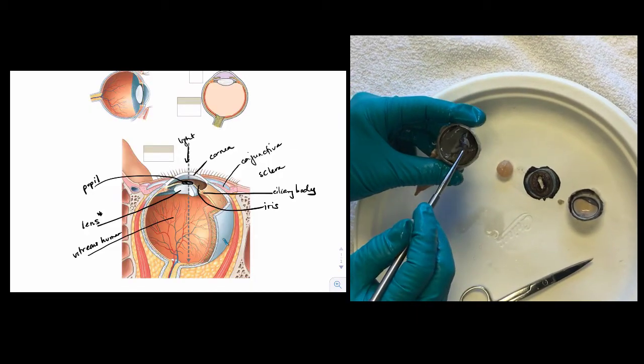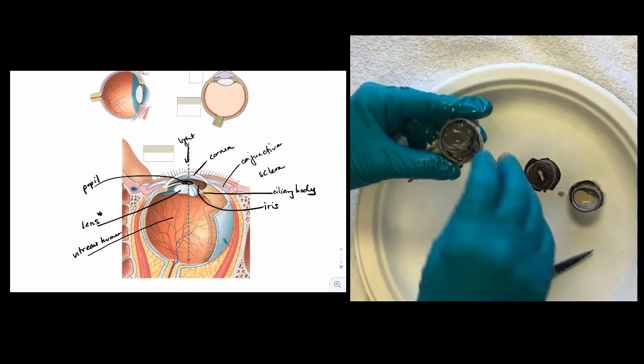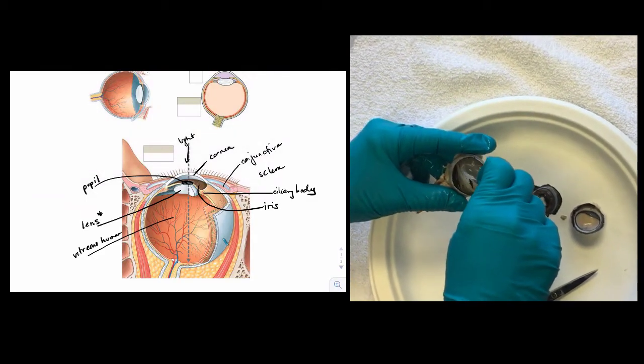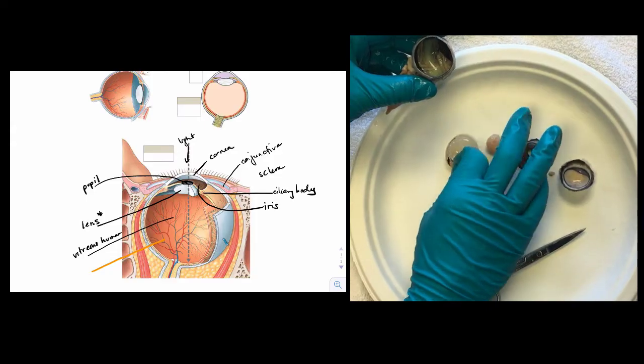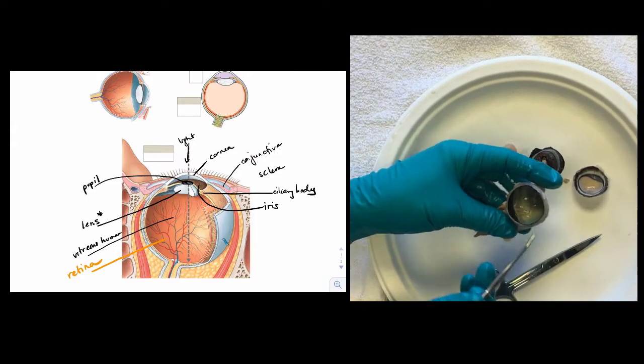We can now remove the vitreous humor, this jelly-like substance in the back of the eye. Pull out the vitreous humor and what's remaining is the neural layer. This is the retina.